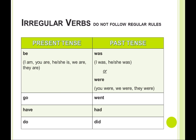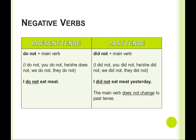Irregular verbs: how to form the simple past tense. Here's a chart showing irregular verbs — they do not follow regular rules. For example, 'be' in the present tense (I am, you are, he/she is, we are, they are) becomes 'was' or 'were' in the past tense. 'Go' becomes 'went,' 'have' becomes 'had,' and 'do' becomes 'did.'